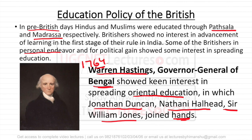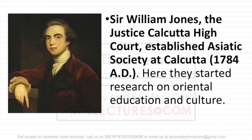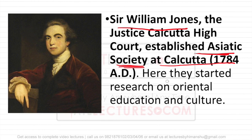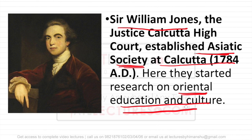Sir William Jones was the Justice of Calcutta High Court, and what he did was he established the Asiatic Society at Calcutta in 1784 AD. Basically, he started research on Oriental education — the basic local education, the way they teach, what the culture of India is. So he mainly emphasized on these things.